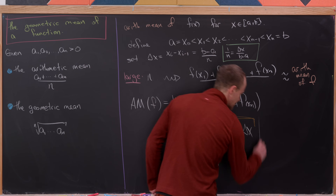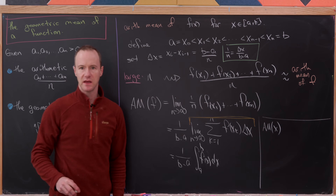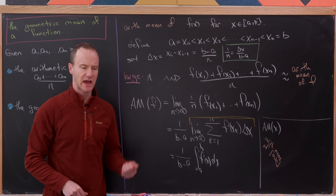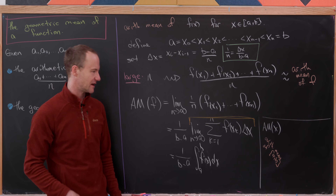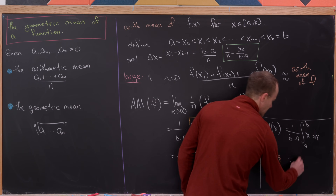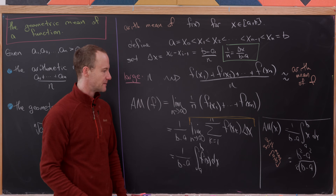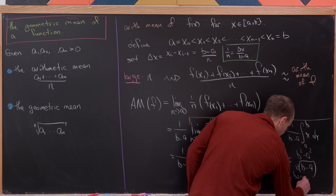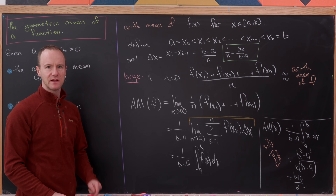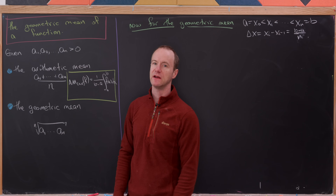So the arithmetic mean of a function is (1/(b-a)) times the integral from a to b of f(x) dx. As a check, the arithmetic mean of x on [a, b] — the arithmetic mean of the interval — gives (1/(b-a)) times the integral of x dx, which equals (b² - a²) / (2(b-a)) = (b + a) / 2. That's just the normal average, as expected.